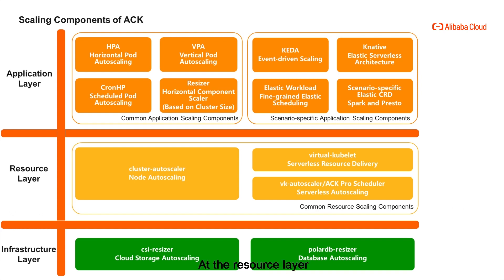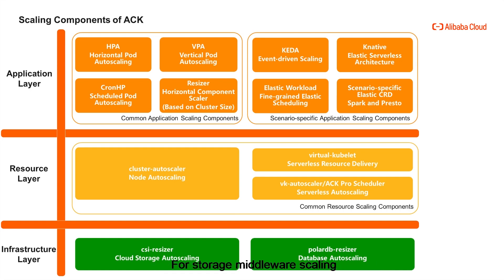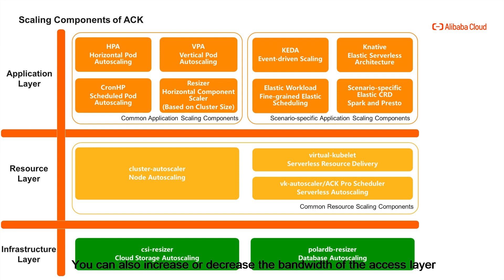At the resource layer, resources can be scaled in two modes: node and nodeless. For the node mode, cluster autoscaler is applied. For the nodeless mode, virtual kubelet and VK autoscale are applied. For K8S clusters version 1.2.0 or later, ACK Pro scheduler is provided instead of VK autoscale. At the infrastructure layer, for storage middleware scaling, CSI resizer can be used — when the storage size of a NAS disk reaches a specified threshold, CSI resizer enables dynamic scaling. Alibaba Cloud ACK has also collaborated with PolarDB, allowing you to scale read-only replicas in databases and increase or decrease the bandwidth of the access layer.